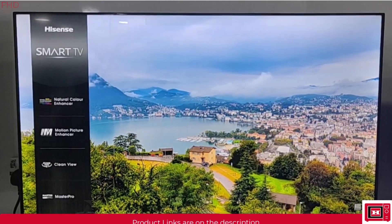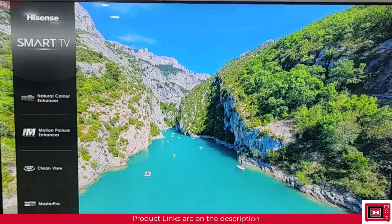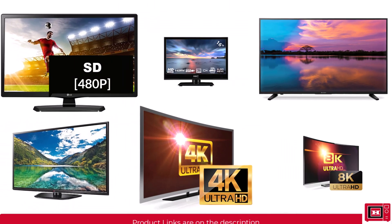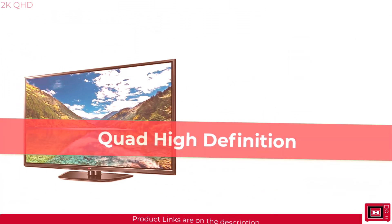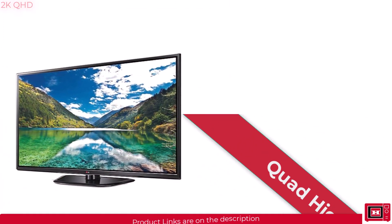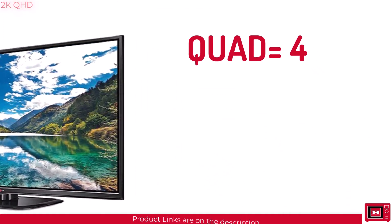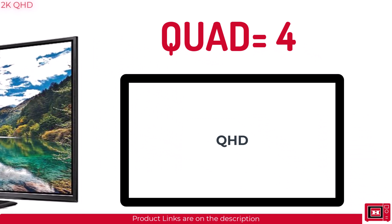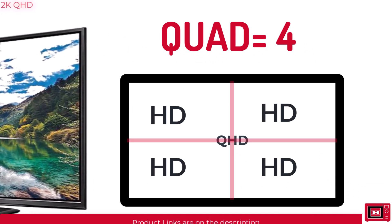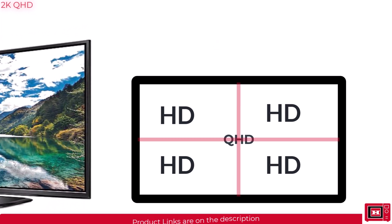2K HD or QHD means quad high definition. Quad means 4, which tells you one QHD display is as big as 4 HD displays, thus the name QHD.